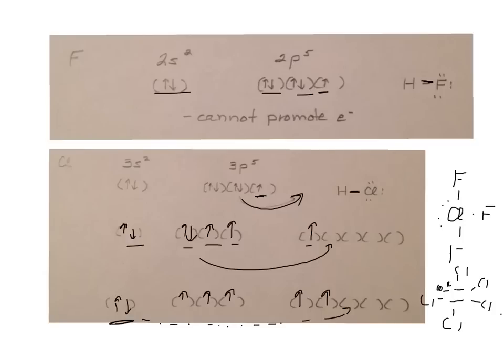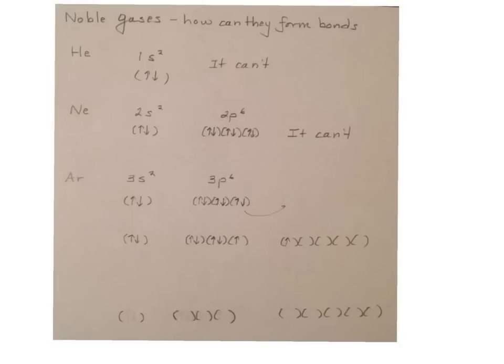Last but not least, let's look at your noble gases. Well, they're so stable. How can they possibly form bonds? Well, helium can't. Neon can't. But once you get to argon and higher, you've got the ability to promote an electron.